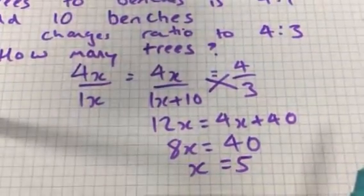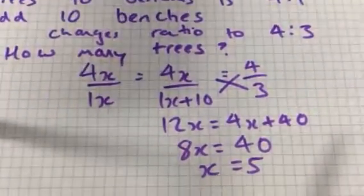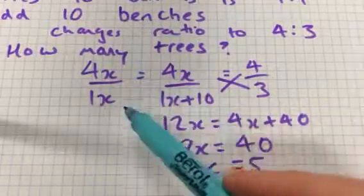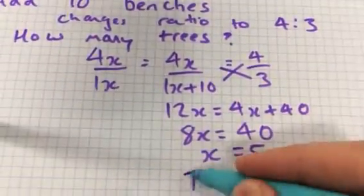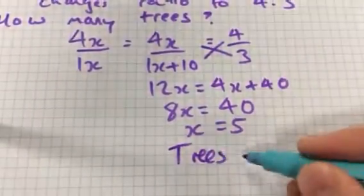And is that the answer we wanted? No, it's not. We want the number of trees, because that's the number of the original benches. The number of trees is... So you do 5 times 4 to get you to 20.